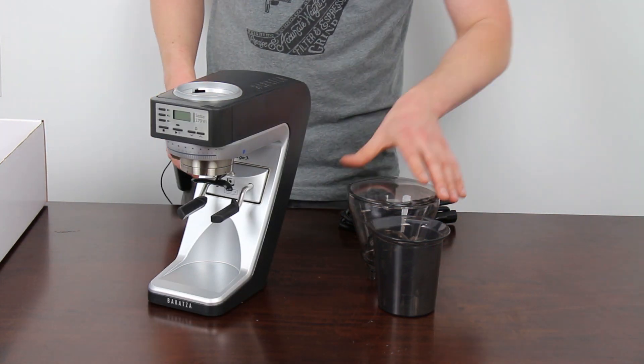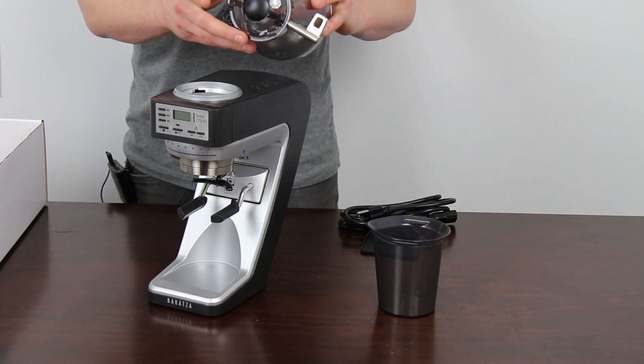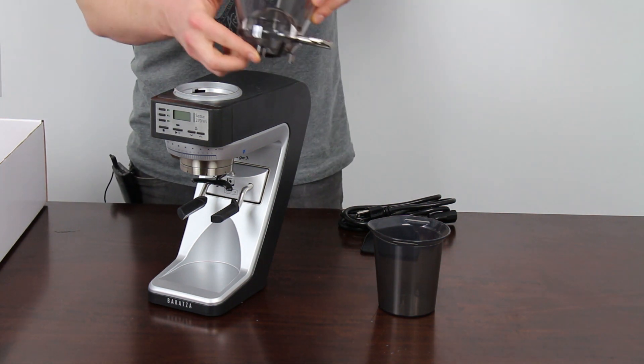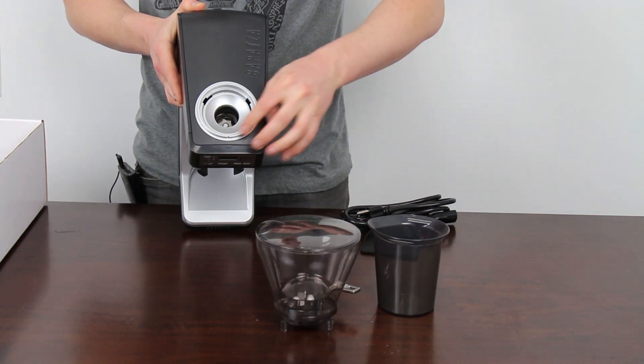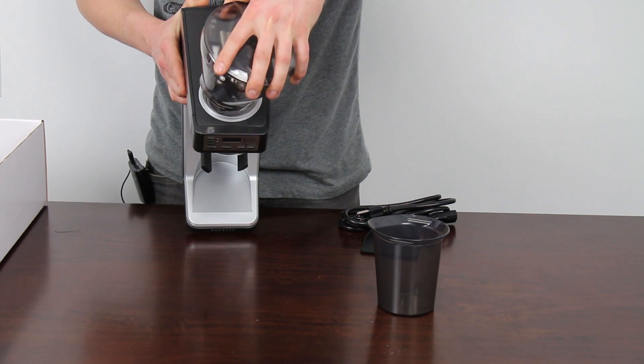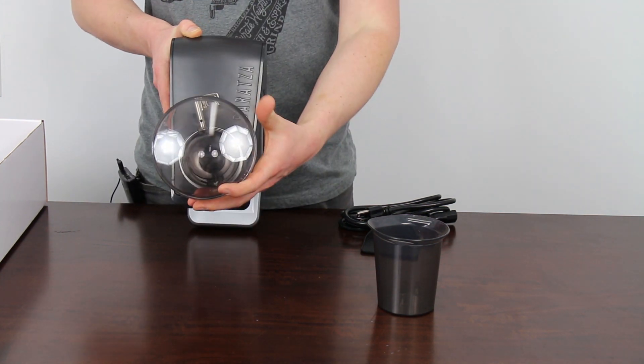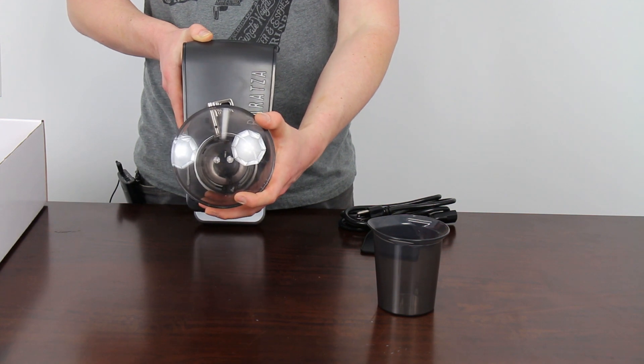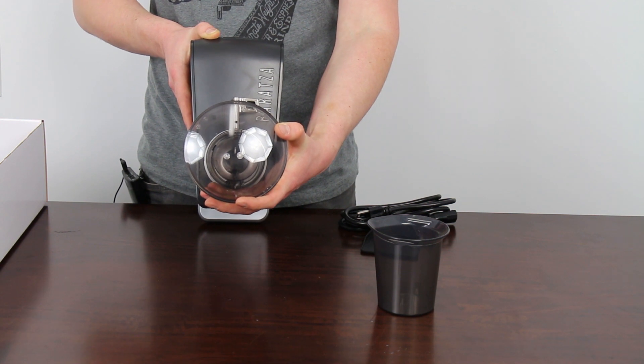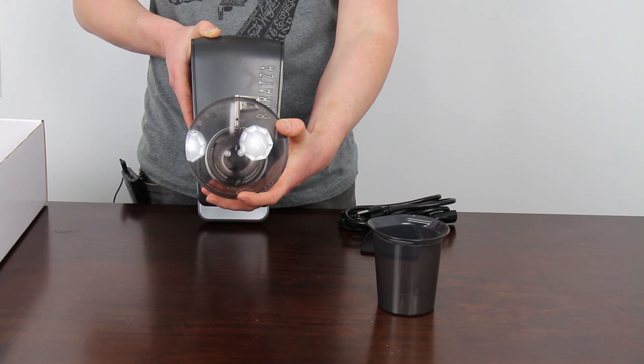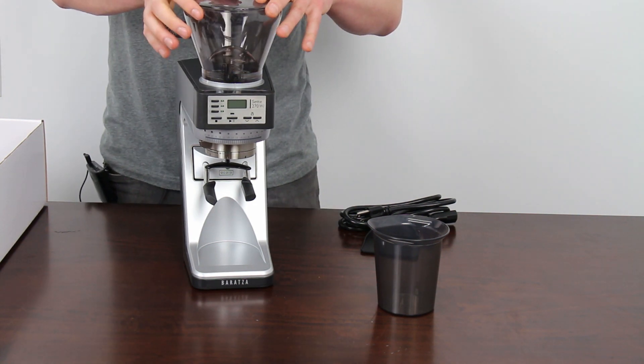Alright we'll go ahead and put the hopper on top of the grinder. So the hopper has three legs on the bottom of it and these three legs key into three holes on the top of the grinder. Once you get the legs to key into the holes then you need to rotate the hopper clockwise to lock it into position. Rotating the hopper clockwise is a critical step and it's a required step to get the motor to turn on.